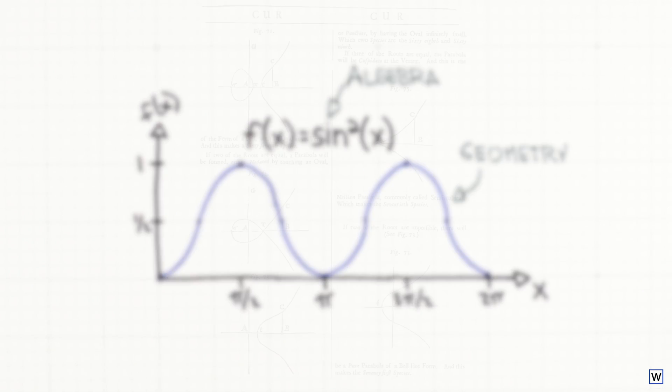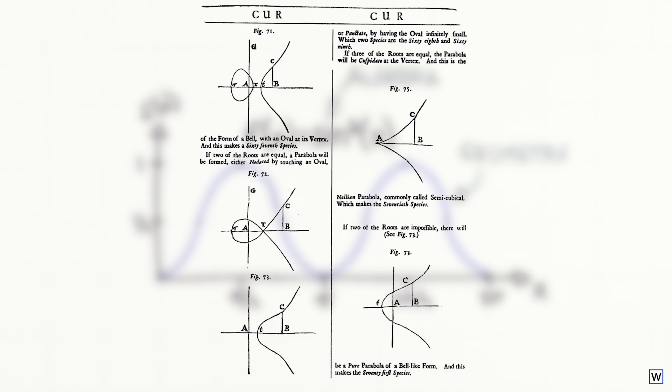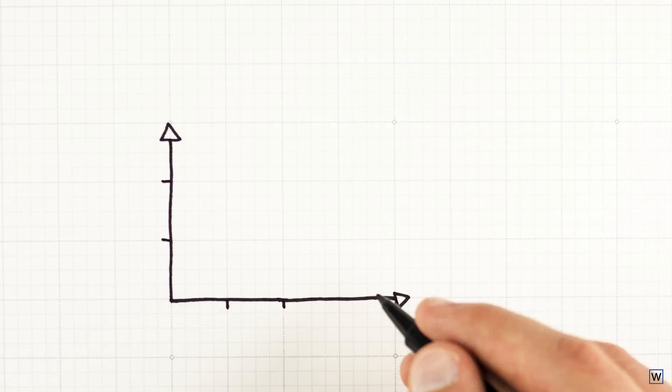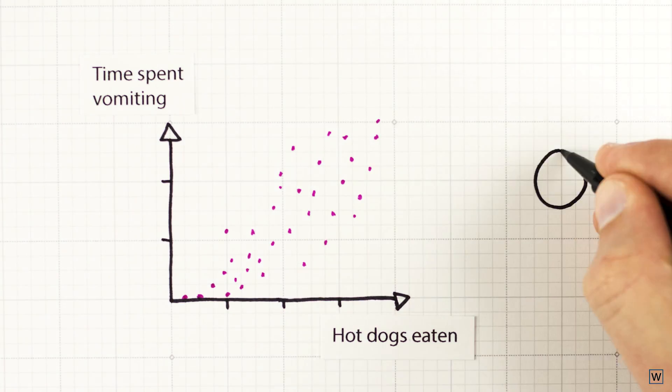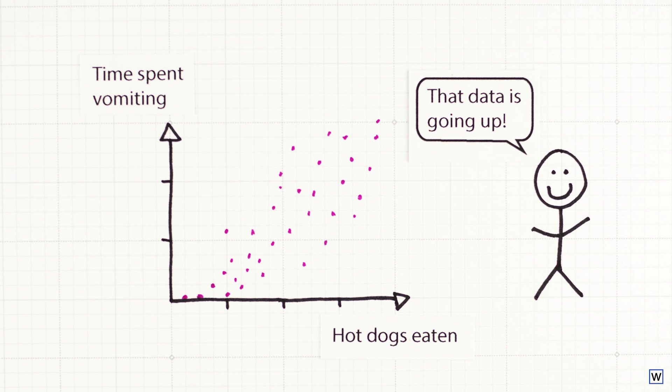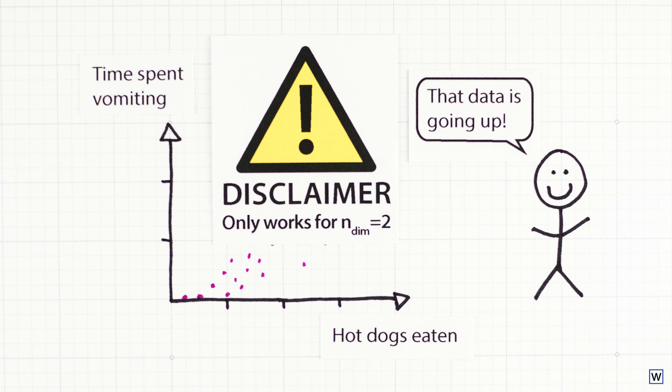This greatly aided early efforts at classifying functions by Newton and others, and today the Cartesian coordinate system shows up everywhere, helping us do all kinds of things like spot trends in data. So that's all fun and wonderful, but the Cartesian coordinate system does come with a disclaimer. It only works in two dimensions.